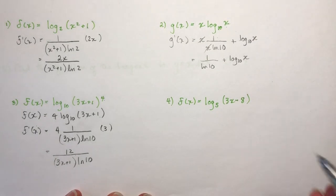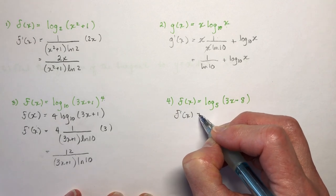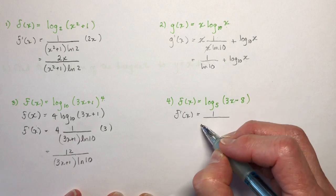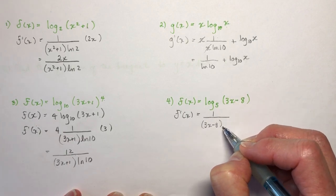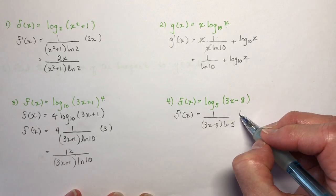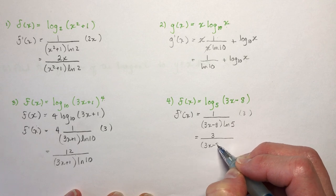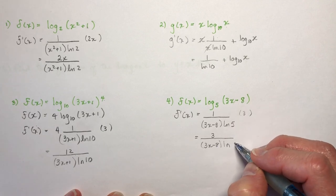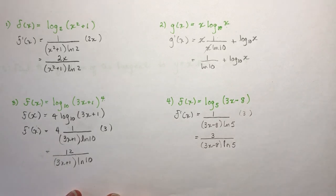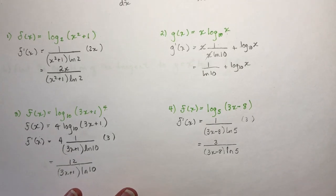For number 4, f of x equals log base 5 of (3x − 8). So f prime of x equals 1 over (3x − 8) in brackets, times ln 5, times the derivative of the inside, which is 3. Once you get the pattern going — 1 over x·ln b — say that a few times and you'll have it nailed.